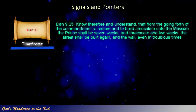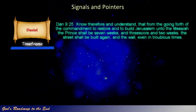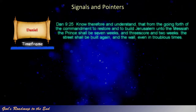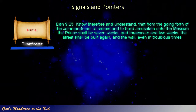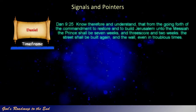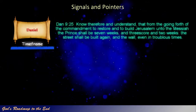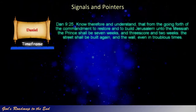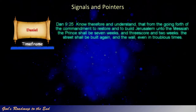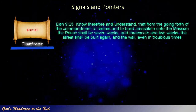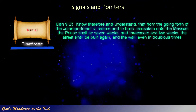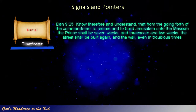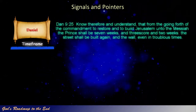Daniel 9 verse 25: Know therefore and understand, that from the going forth of the commandment to restore and to build Jerusalem unto the Messiah the Prince shall be seven weeks, and threescore and two weeks, the street shall be built again, and the wall, even in troublous times. Sixty-nine weeks of years, or four hundred and eighty-three years after the decree was given to rebuild Jerusalem by Artaxerxes, Jesus rode into Jerusalem on a donkey.